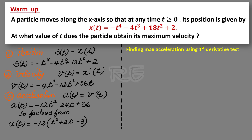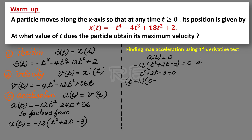Now we're going to find the maximum for the acceleration function. We set a of t equal to 0. Therefore, negative 12 times t squared plus 2t minus 3 is equal to 0. Negative 12 cannot be 0, therefore t squared plus 2t minus 3 equals 0. In factored form, we'll have t plus 3 times t minus 1 is equal to 0.